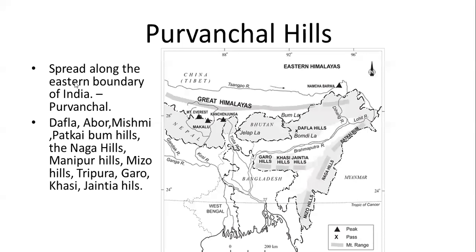Coming to the Purvanchal Hills — what do we mean by Purvanchal Hills? It is the last part of the Himalayas, spread along the eastern boundary of India. The eastern boundary of India is called Purvanchal. All the tribal states are covered with these mountains. They include Dafla, Abor, Mishmi, Patkai Bum Hills, Naga Hills, Manipur Hills, Mizoram Hills, Tripura Hills, Garo Hills, Khasi Hills, and Jaintia Hills. You can see some of these on the map — it starts from the northeast and goes around the tribal states.